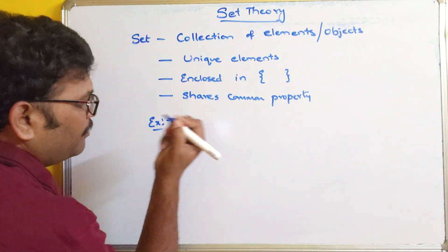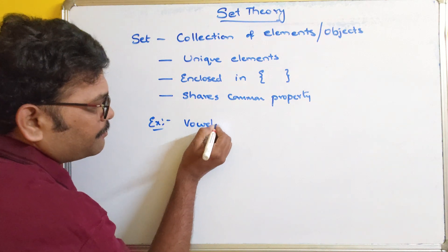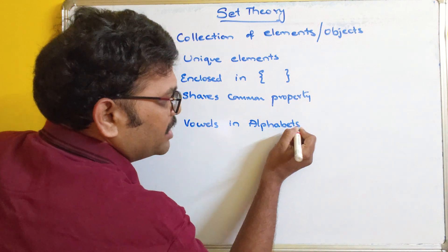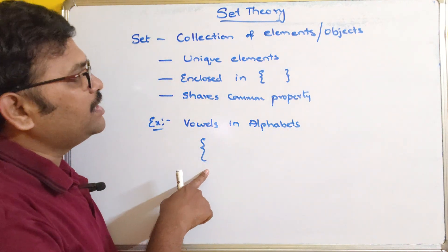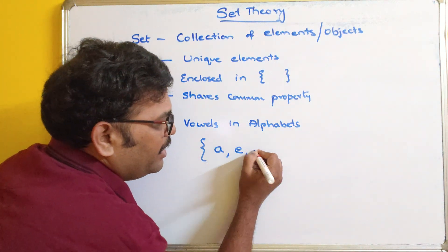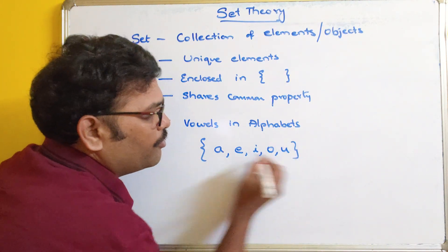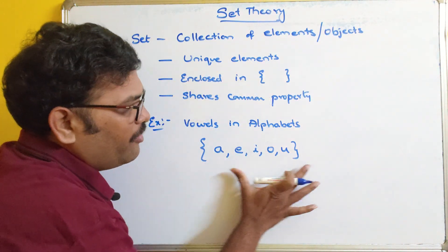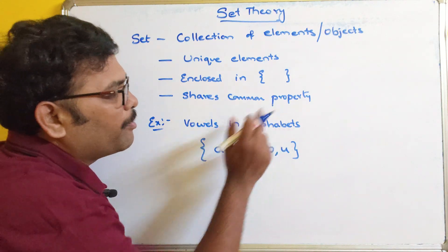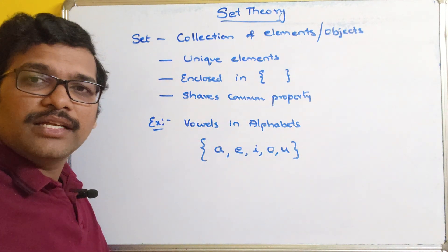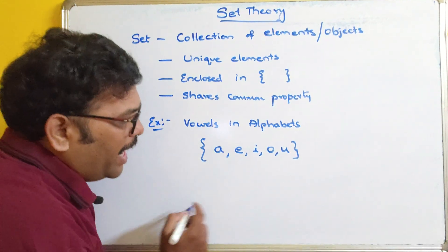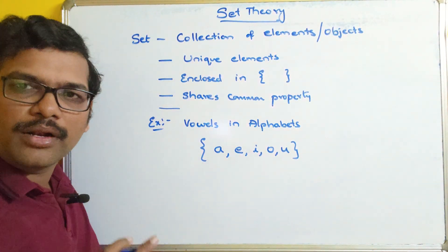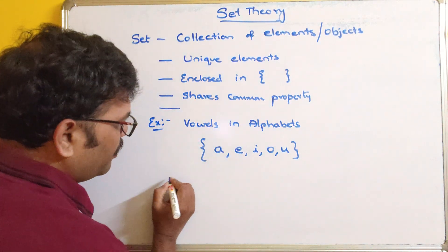For example, we can write the set of vowels in alphabets. That can be written in curly braces as {A, E, I, O, U} — unique elements with no repetition, enclosed in curly braces, and all sharing the common property of being vowels. Also, these elements cannot need to be in the same order; they can be listed in any order.